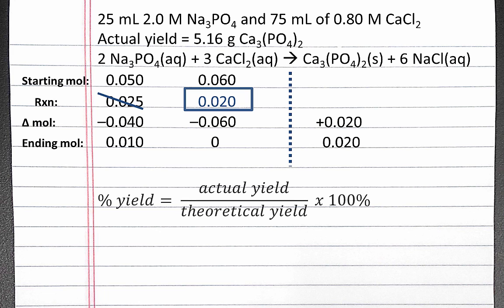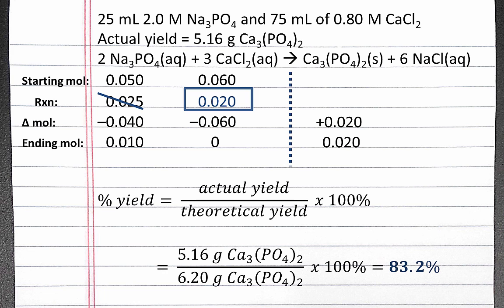To calculate percent yield, we can use the equation: percent yield equals actual yield divided by theoretical yield times 100%. We're given the actual yield in our problem, 5.16 grams, and we've calculated our theoretical yield, 6.20 grams, so when we put this in our calculator, we get 83.2%.